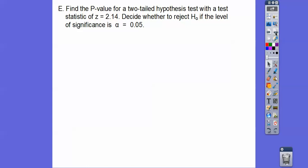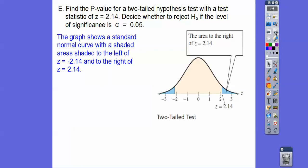So let's find the p-value for a two-tailed hypothesis test with the test statistic of Z equals 2.14. Decide whether we're going to reject it at the 5% level. So 2.14 is going to be right past 2. So 2.14 would be this right here.